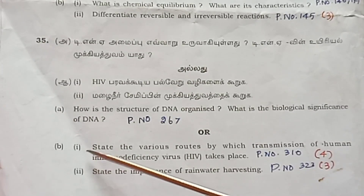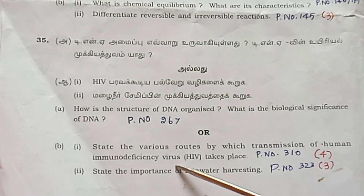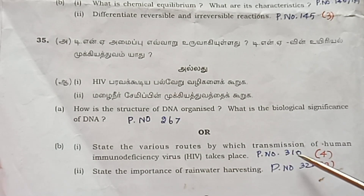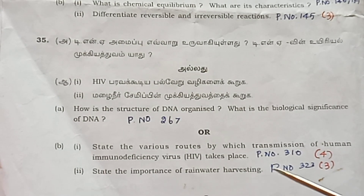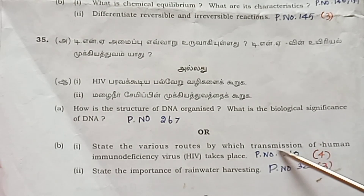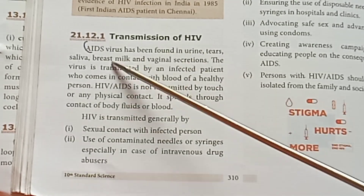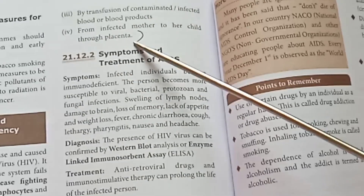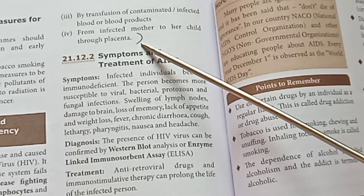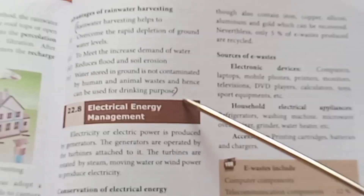Question 35 option B: State the various routes by which transmission of HIV (Human Immunodeficiency Virus) takes place — page number 310, 4 marks. Second part: State the importance of rainwater harvesting — page number 323, 3 marks. HIV can be transmitted from infected mother to child through the placenta. Advantages of rainwater harvesting — four points.